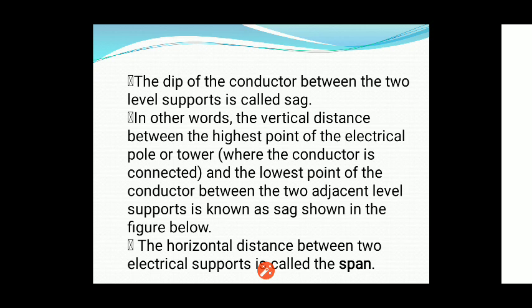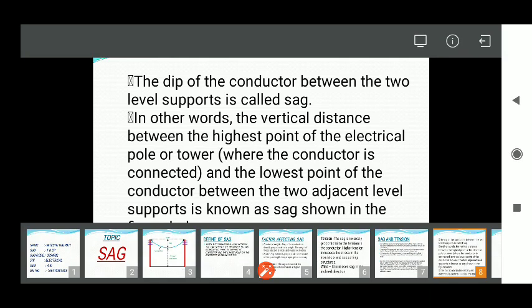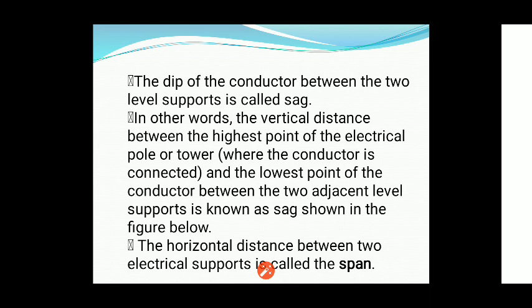The dip of the conductor between two level supports is called sag. In other words, the vertical distance between the highest point of the electrical poles and the lowest point of the conductor — this difference is known as sag. The horizontal distance between the two electrical supports is called the span.